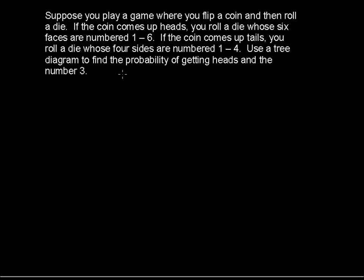Suppose you play a game where you flip a coin and then roll a die. If the coin comes up heads, you roll a die whose six faces are numbered 1-6. If the coin comes up tails, you roll a die whose four sides are numbered 1-4. Use a tree diagram to find the probability of getting heads and the number 3.